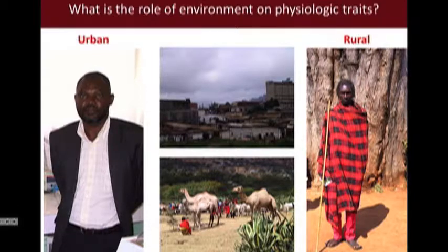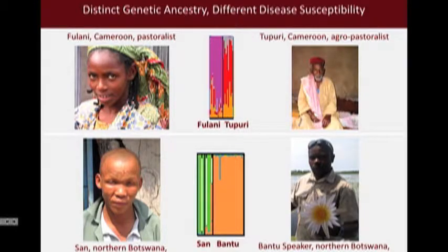One approach we take is to compare people of similar genetic ancestry living in different environments, such as urban versus rural. Another approach is to look at people of very different genetic ancestry living in the same environment with different disease risk. For example, the Fulani in Cameroon are traditionally nomadic pastoralists. We noticed they have a relative resistance to malaria for reasons we don't yet understand, but also some of the highest prevalence of diabetes and hypertension I've ever seen in rural African populations. We hypothesize these may be linked—a boosted immune response making them resistant to malaria but perhaps more susceptible to hypertension and diabetes.